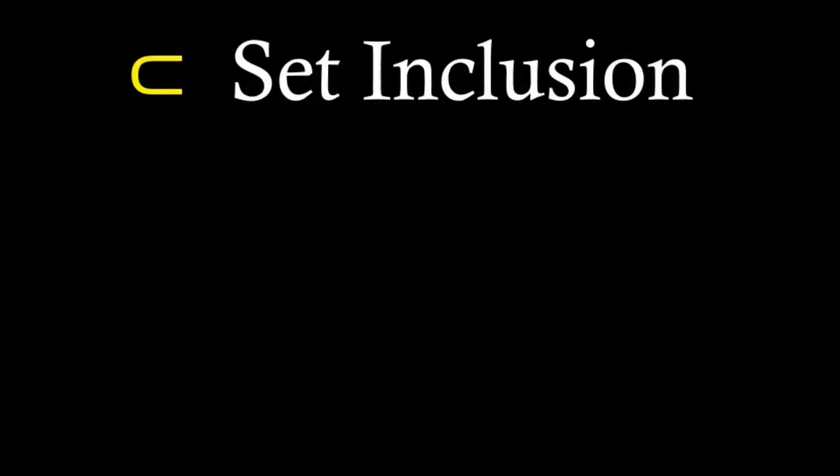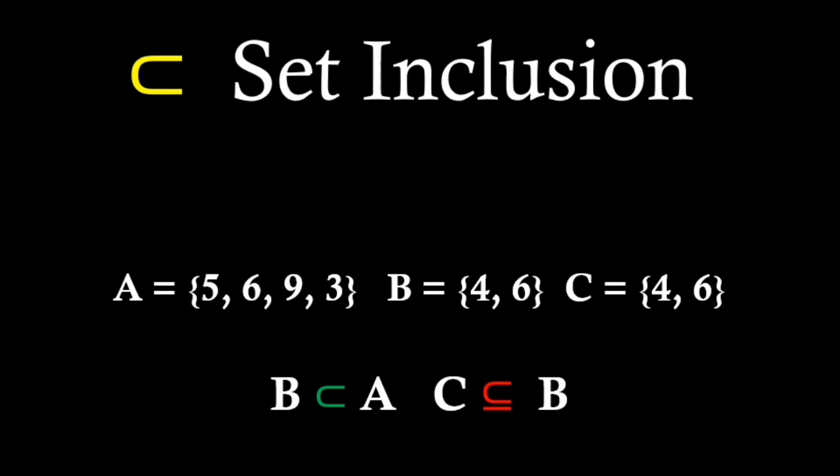The set inclusion sign represents that one set is a subset of another set. If we add a line, we get a symbol that also denotes set inclusion, but it is used for emphasizing that the sets can be equal. If we cross that line, we get a symbol that denotes a proper subset, meaning that the sets are not equal.